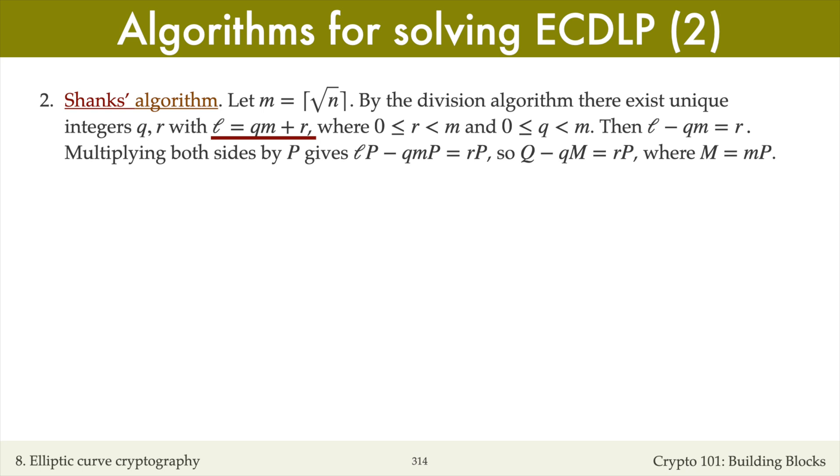Rearranging the equation, we have l minus qm equals r. Then multiplying both sides by the point P gives us lP minus qmP equals rP, where M equals mP.